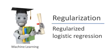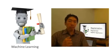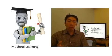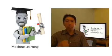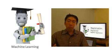For logistic regression, we previously talked about two types of optimization algorithms. We talked about how to use gradient descent to optimize the cost function J of theta, and we also talked about advanced optimization methods that require you to provide a way to compute the cost function J of theta and the derivatives. In this video, we'll show how you can adapt both of those techniques, gradient descent and the more advanced optimization techniques, to work for regularized logistic regression.